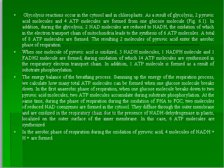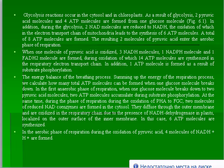As a result of glycolysis, two pyruvic acid molecules and four ATP molecules are formed from one glucose molecule. In addition, two NAD molecules are reduced to NADH, whose oxidation in the electron transport chain of mitochondria leads to the synthesis of six ATP molecules, giving a total of eight ATP molecules from glycolysis. The resulting two molecules of pyruvic acid then enter the aerobic phase of respiration, where, when one molecule of pyruvic acid is oxidized, three NADH molecules, one NADPH molecule, and one FADH₂ molecule are formed, from which approximately 14 ATP molecules are synthesized in the respiratory electron transport chain.